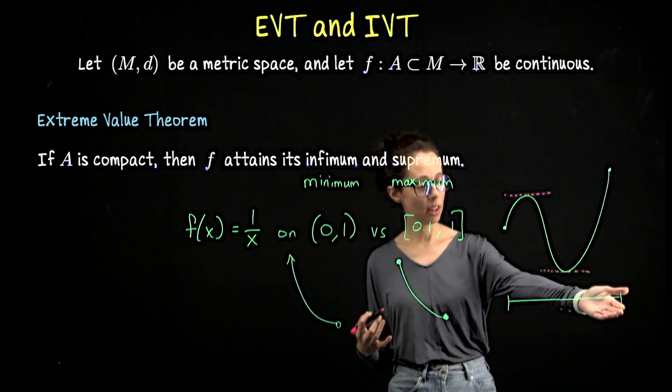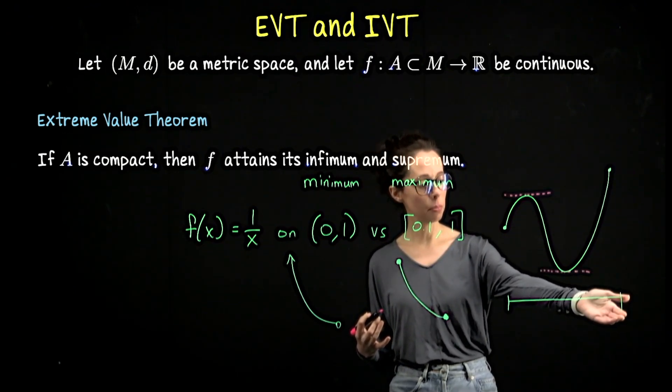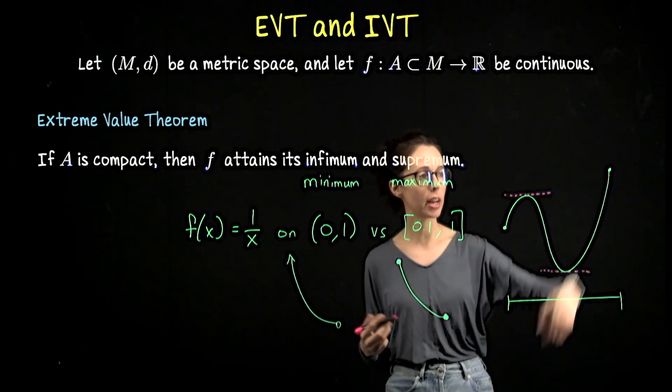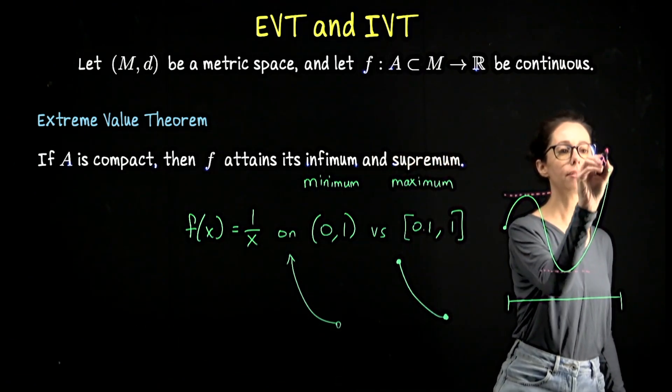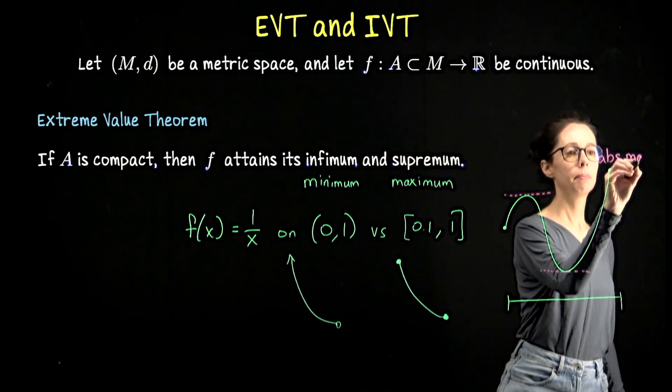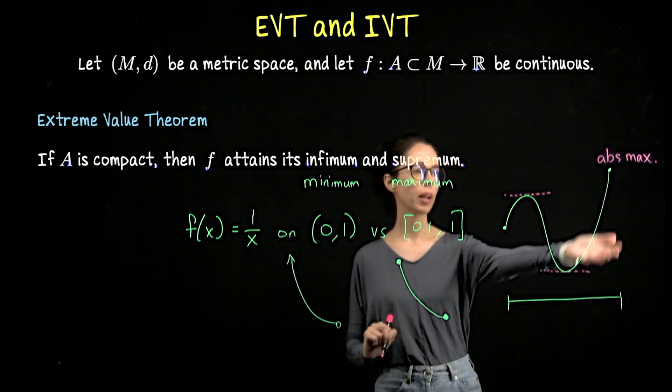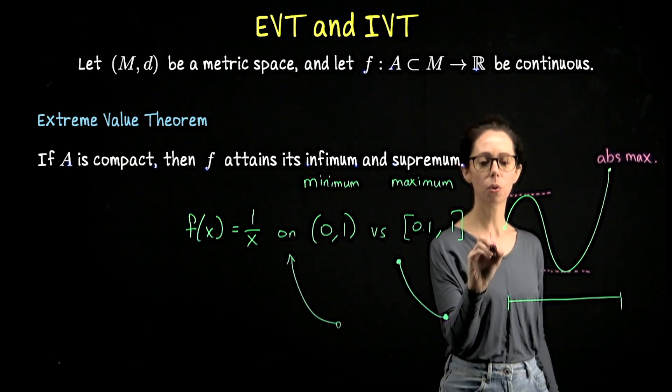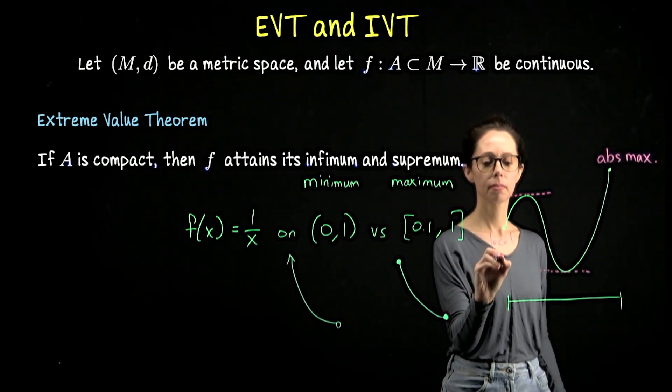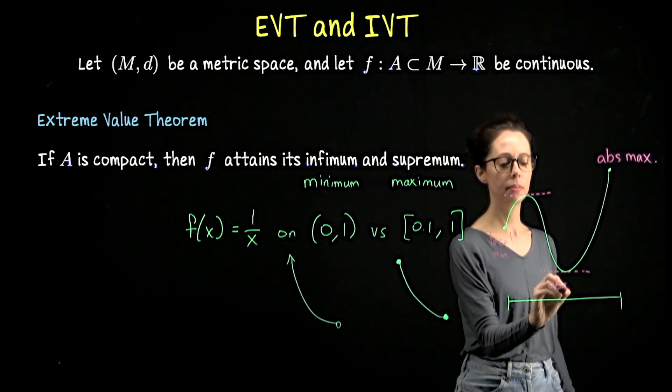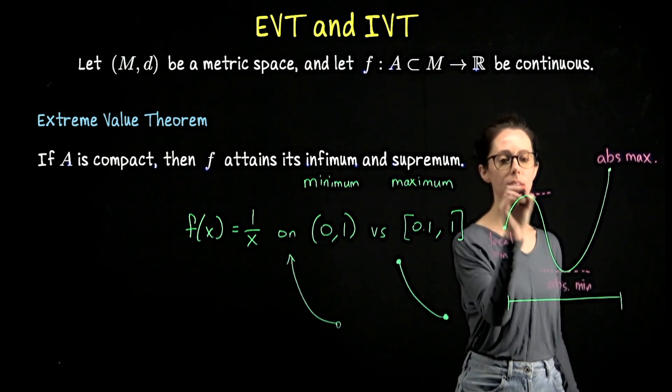But you wouldn't be done at that point. There's this check the endpoints procedure that calculus students follow without really theoretically knowing why they have to do that. That's because for such a function over this compact domain, we land on the endpoint value. This endpoint of the domain here is going to correspond to a function output.